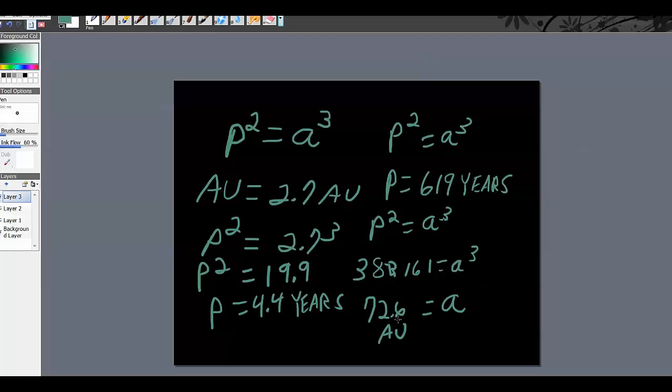So this is a fairly straightforward formula. You'll have to be given one of the two. You'll either have to be given the period or you have to be given the astronomical distance. And you're either going to square something, cube something to find the answer there. We're going to do some problems in class with this. But this is really, you know, fairly straightforward. And if you can punch numbers in the calculator, you'll do pretty good on this.